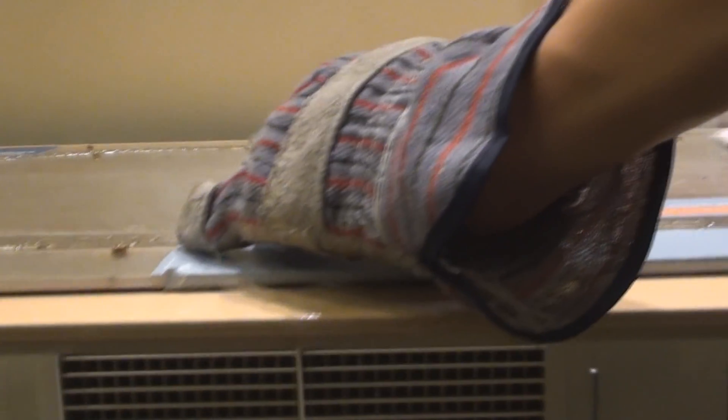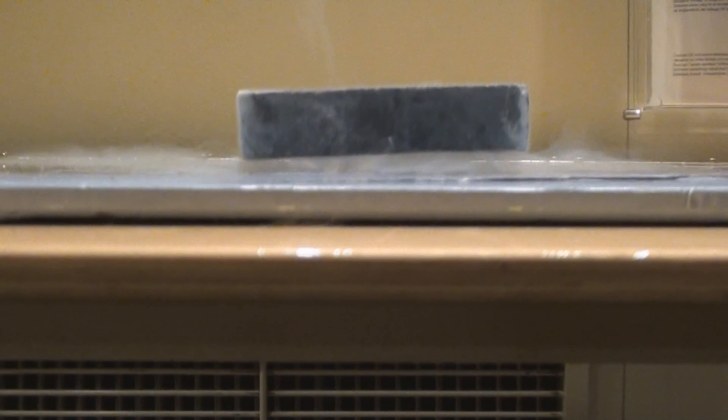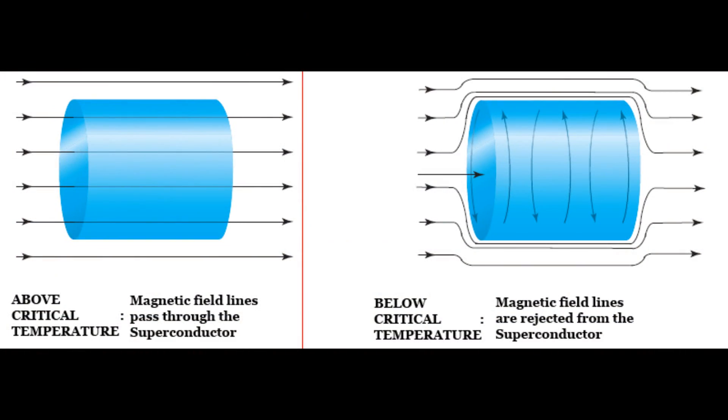When a magnetic field is imposed on a superconductor electric currents are induced on the surface as the magnetic field cannot penetrate the superconductor due to its lack of resistance. This induced magnetic field cancels out the outer field from the magnets and this is known as the Meissner effect.